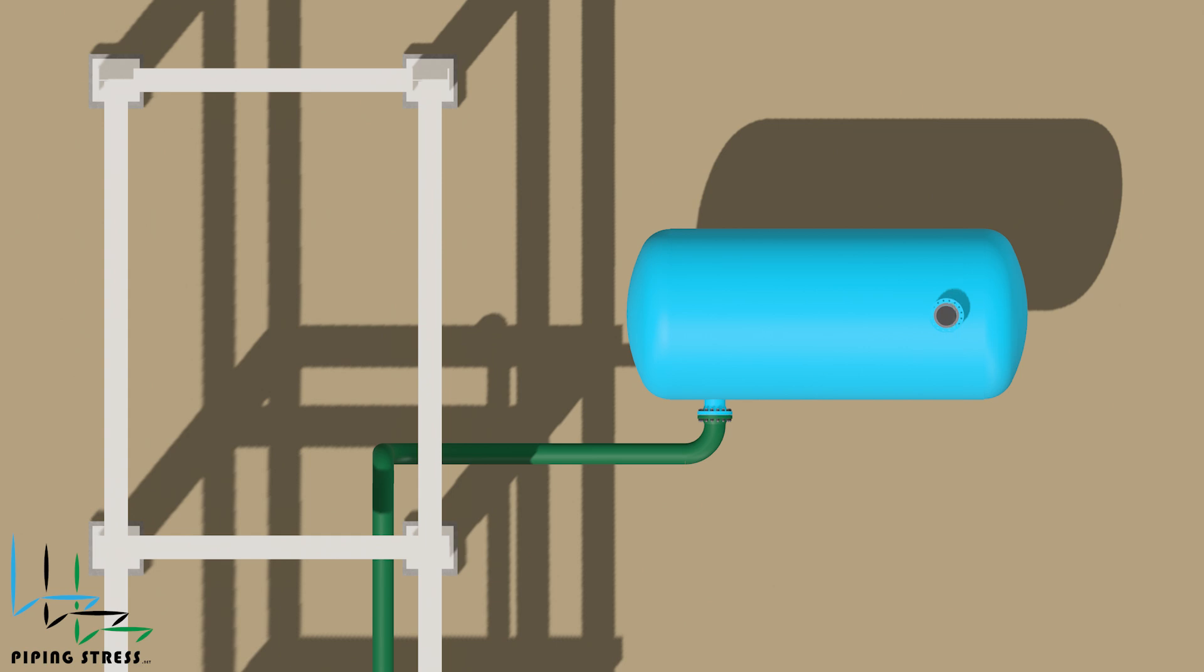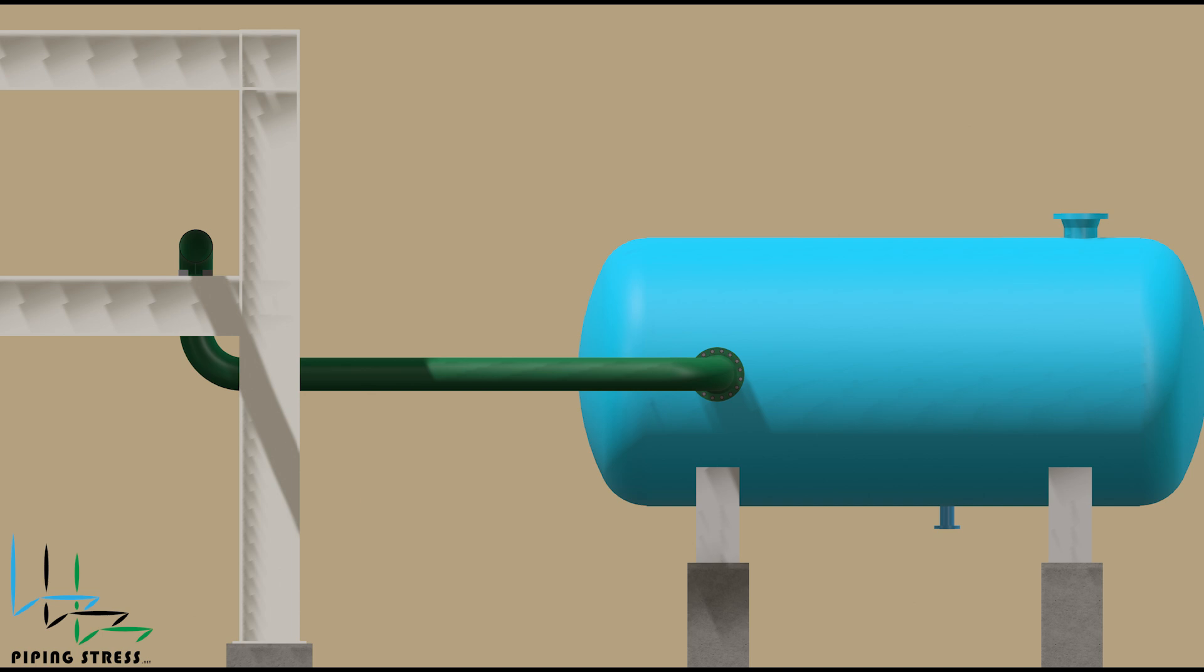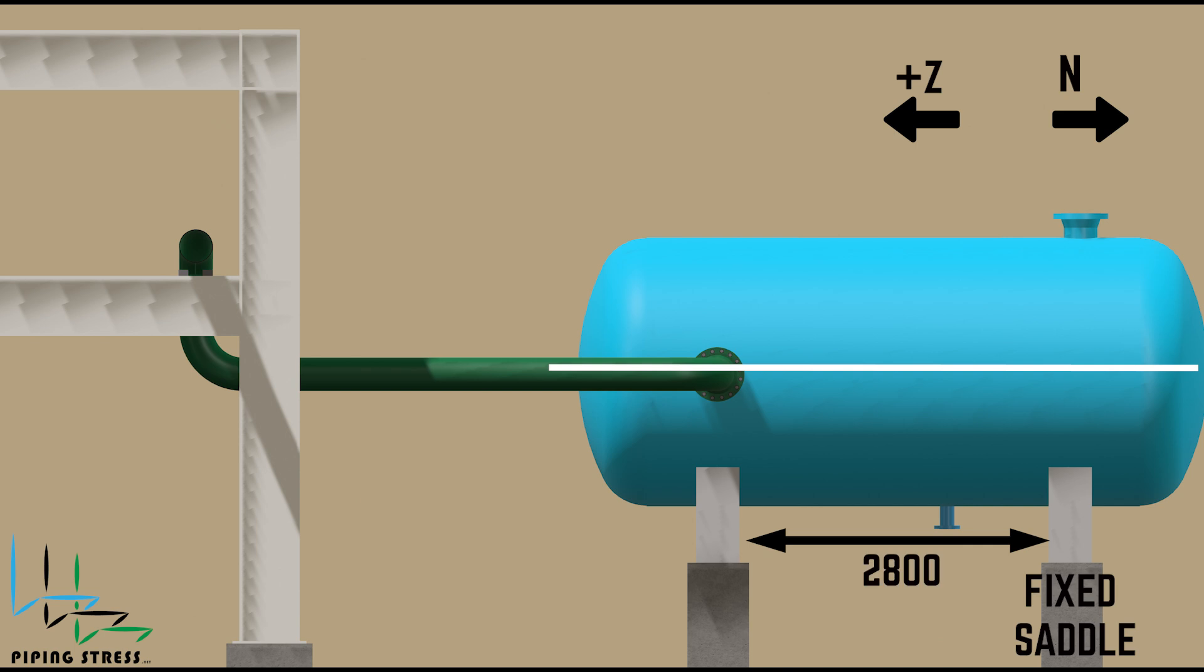The nozzle will expand in 3 axes based on its location. First, the equipment will expand along its own axis. Since the project's north direction is in this direction, let's always consider the direction opposite to the project's north as the positive Z coordinate. In this case, if the fixed saddle is far from the nozzle, there will be an expansion in the positive Z direction. In the first scenario, let's assume that the position of the fixed saddle is the one farthest from the pipe rack. In this case, the expansion in the plus Z direction is calculated by multiplying the expansion coefficient by the distance between the saddle and the nozzle, which is 2800 millimeters.